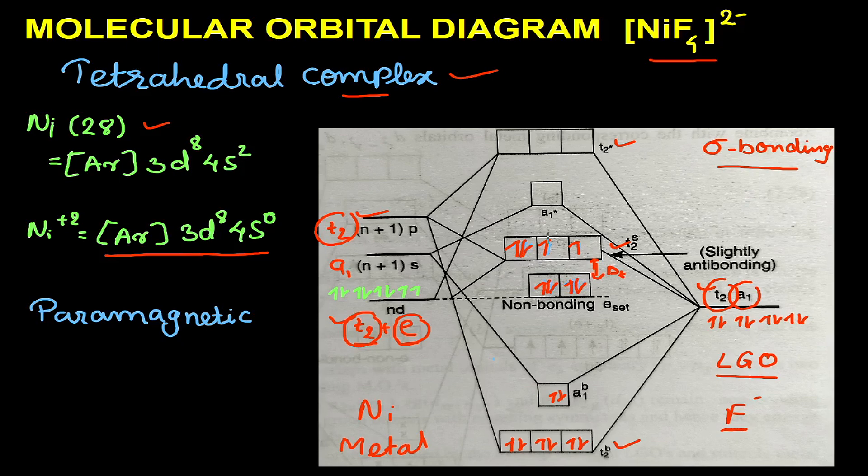In tetrahedral complexes, irrespective of the strength of the ligands, the magnitude of splitting energy is very small. As a result, no pairing of electrons will take place, and it will always result in a high-spin complex. This is a typical MO diagram for NiF₄²⁻ complex.